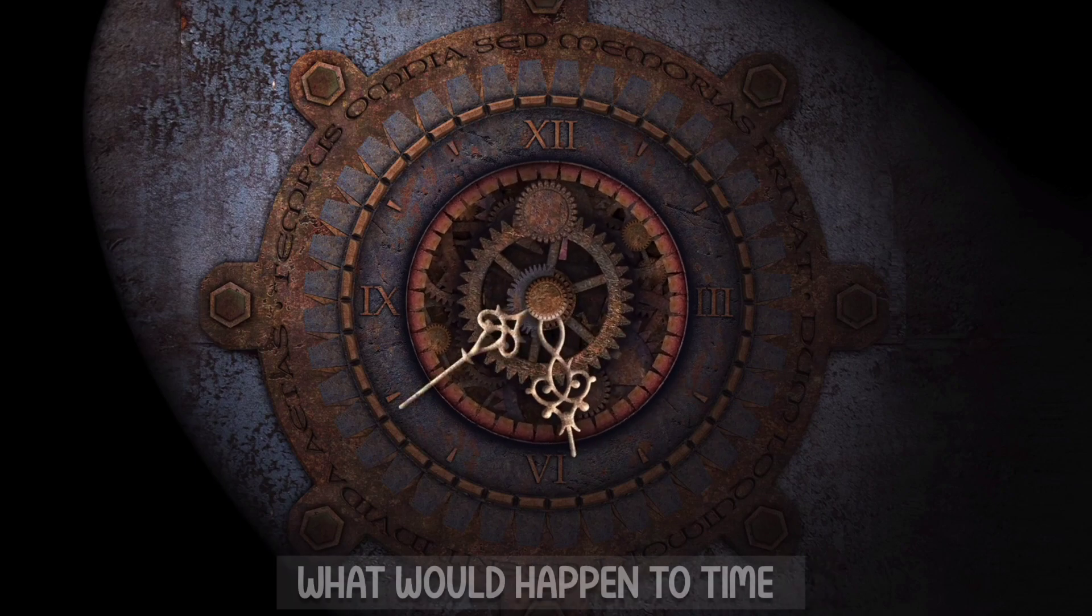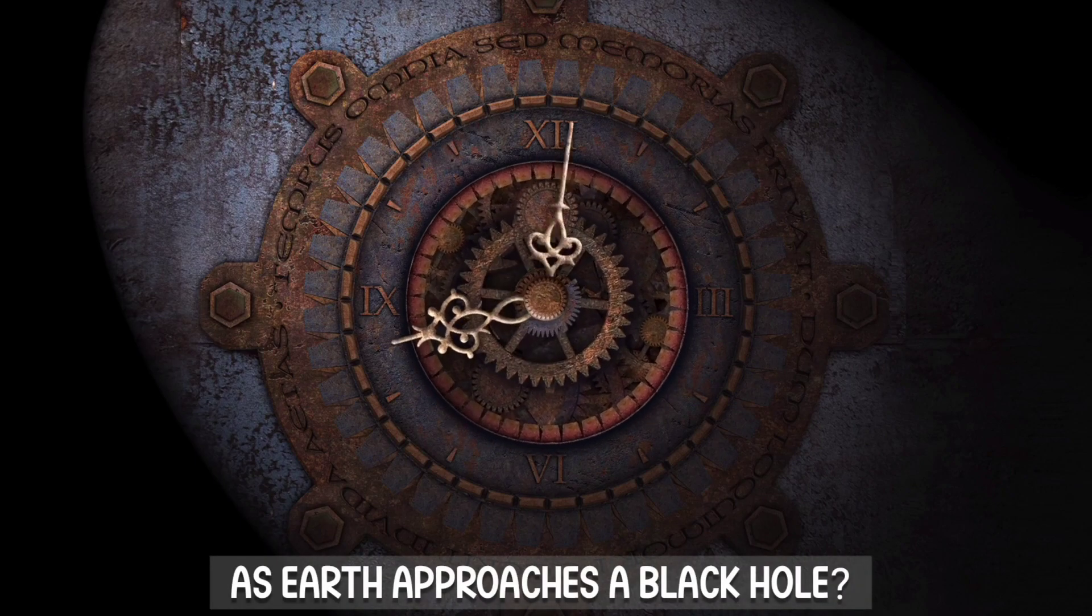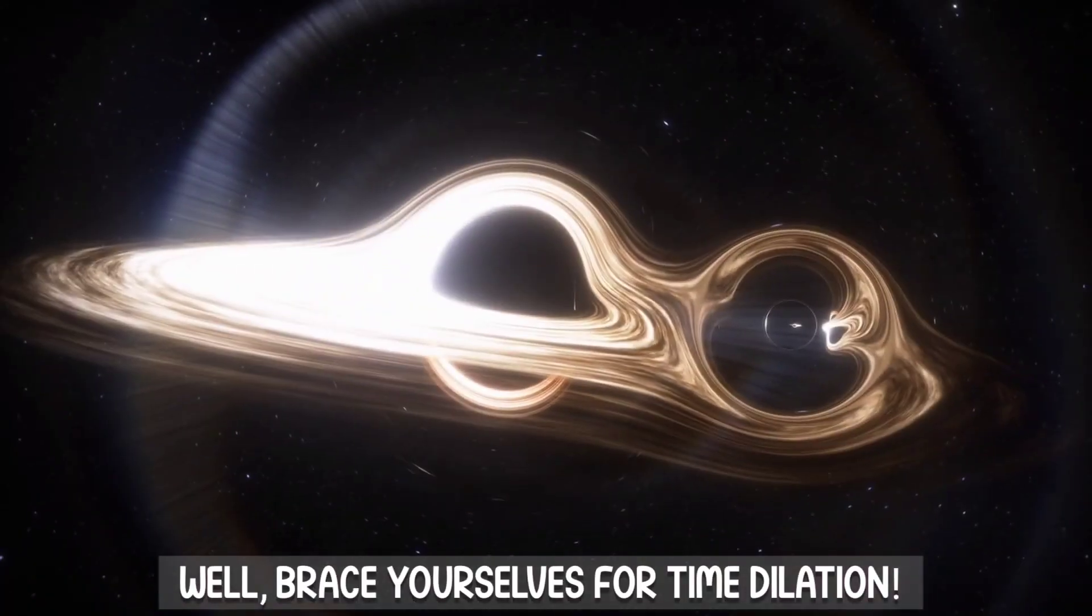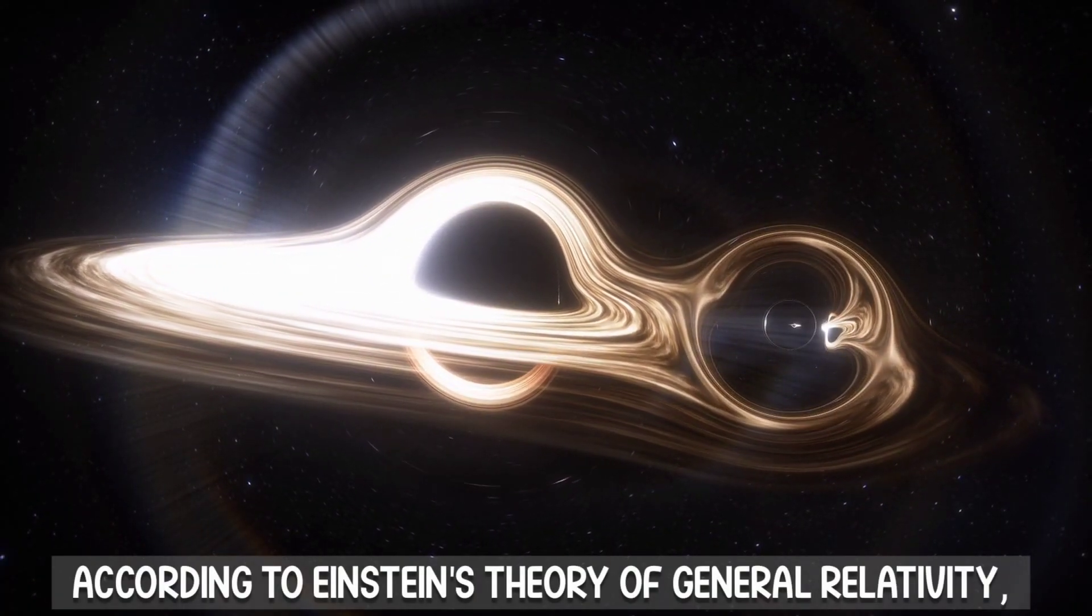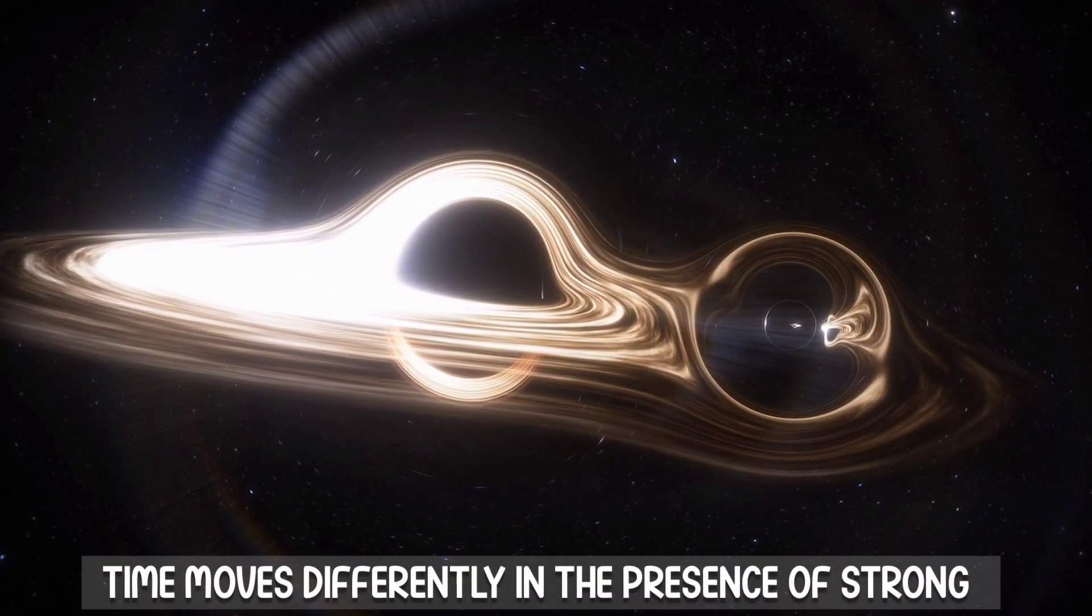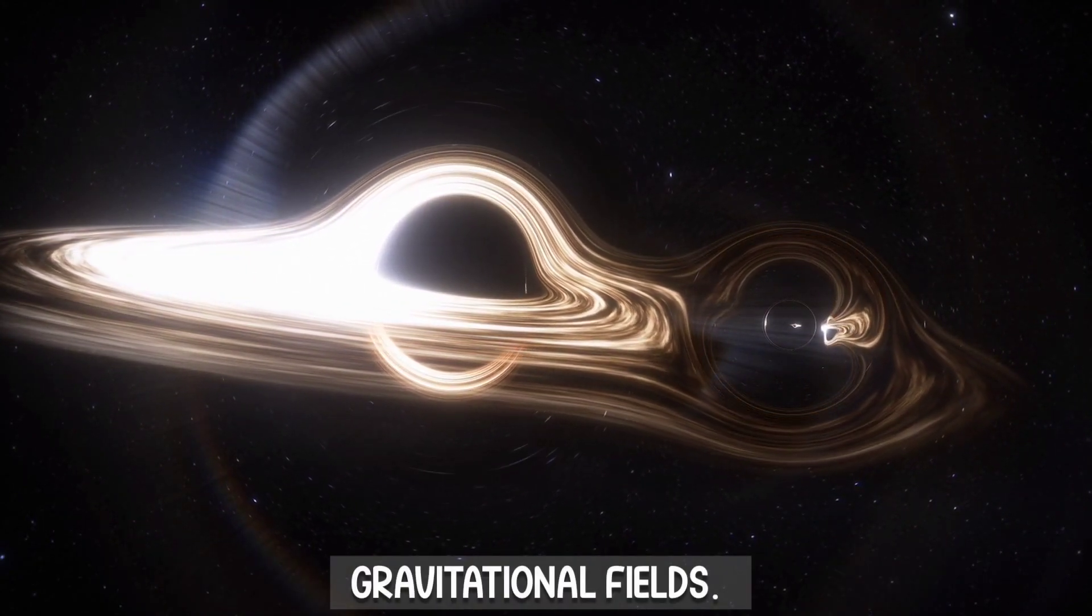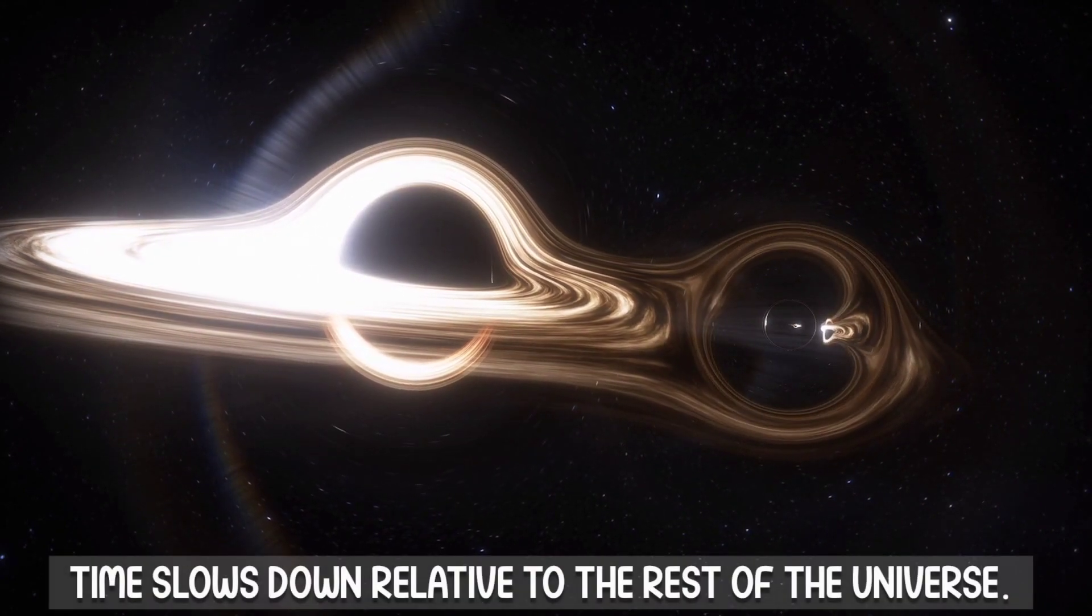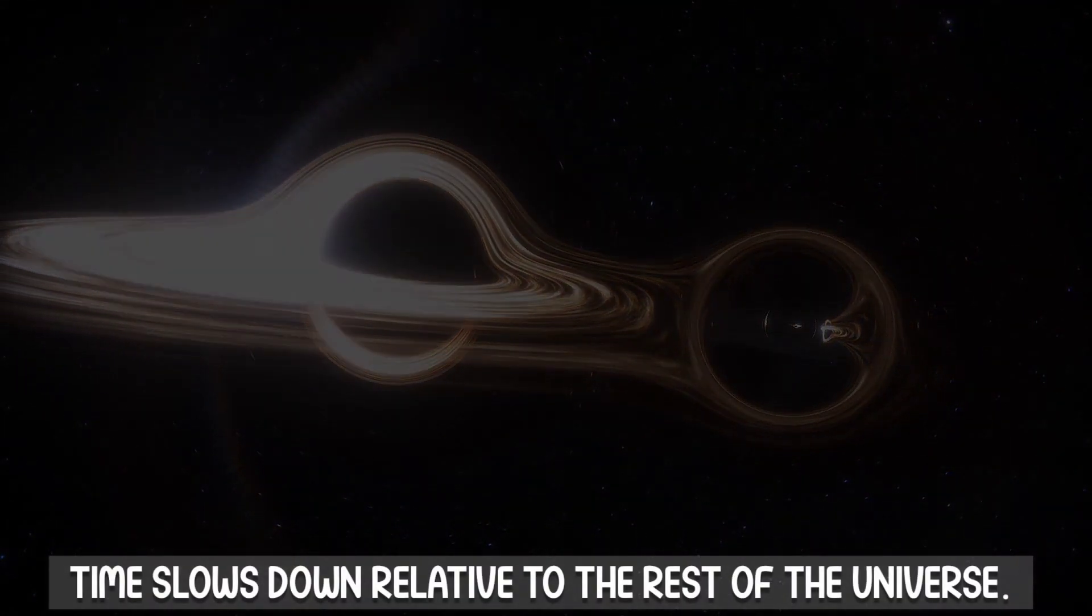At this point, you might wonder, what would happen to time as Earth approaches a black hole? Well, brace yourselves for time dilation. According to Einstein's theory of general relativity, time moves differently in the presence of strong gravitational fields. As Earth gets closer to the black hole, time slows down relative to the rest of the universe.